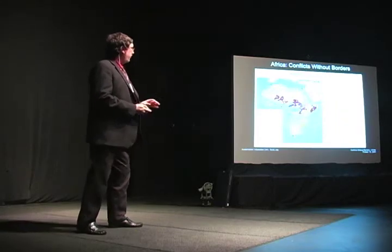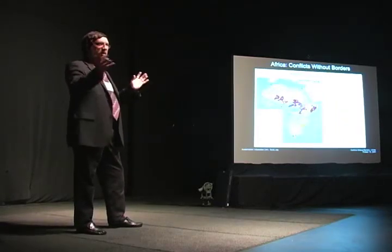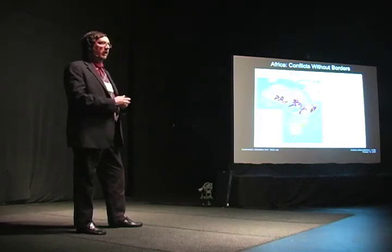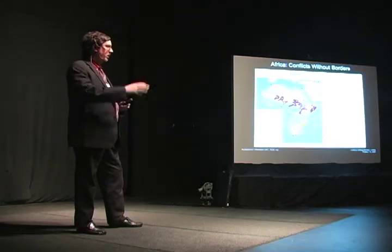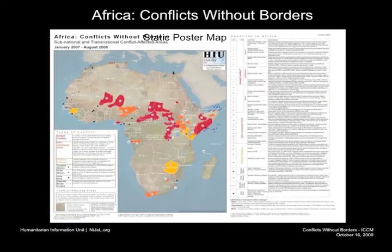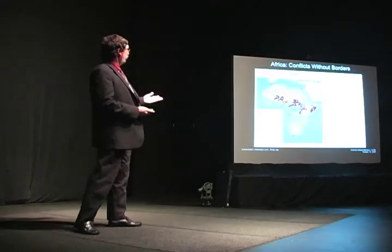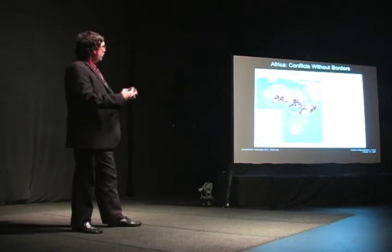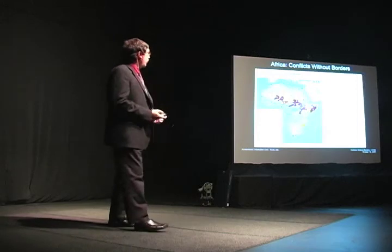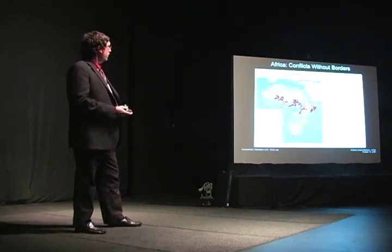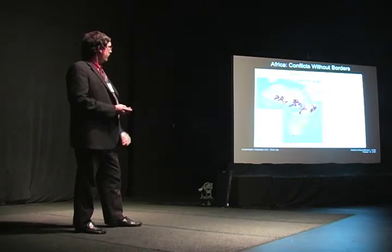We took the incident data — using a lot of open-source incident data from Ushahidi and from many organizations — and plotted that on the map. We also mapped where internally displaced persons were concentrated within the country, as well as refugee camps and rebel bases across borders, and drew a polygon around those areas. In 2008, we published two different maps showing roughly 20 conflicts throughout the African continent, depicting them at subnational and transnational levels with background information in accompanying tables.